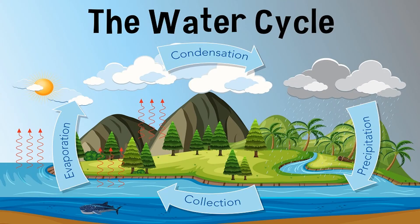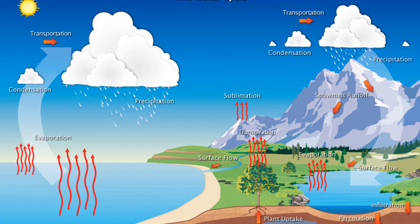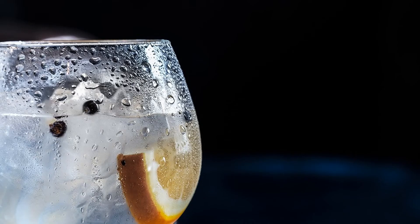Clouds are a part of the water cycle that makes life on Earth possible. When clouds become saturated with water droplets or ice crystals and cannot hold them anymore, the excess water comes down as precipitation — that is, rain or snow.